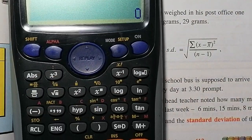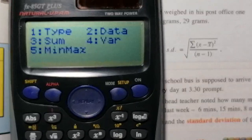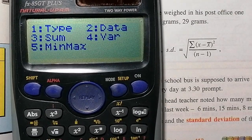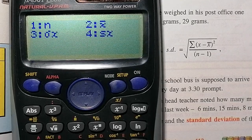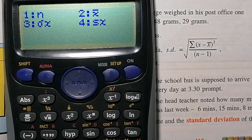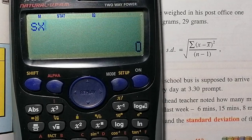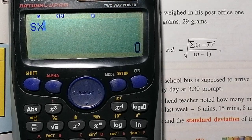So shift and then number one brings me back into stat. I'm going to be using the button number four. That's the one we're always using from that menu. And then I'm using number four from the menu that's here. So if I press button number four, upon the calculator comes SX.